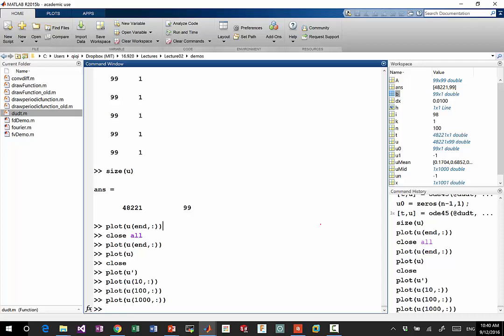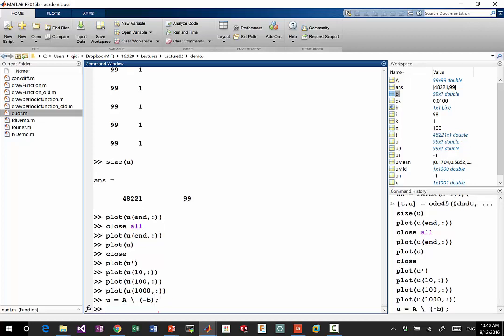I used ODE45, it went through thousands of time steps to solve this equation. But instead, I can just solve the same equation using what? U equal to A backslash B, actually minus B, right? Because I want to solve Au plus B equal to zero. Here I don't have any right-hand side. Okay?